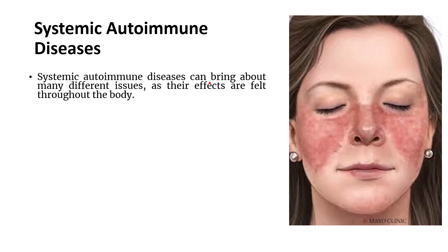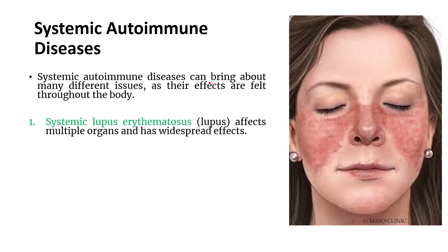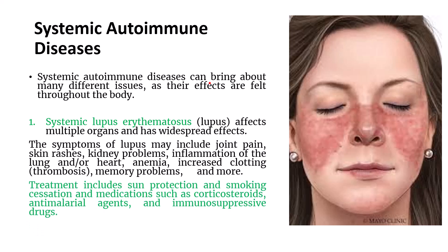Moving to systemic autoimmune diseases, which can be felt throughout the body because they affect multiple organs. First is systemic lupus erythematosus, also called lupus. It affects multiple organs, and symptoms may include joint pain, skin rashes, kidney problems, inflammation of the lungs, heart issues, anemia, increased clotting, and memory problems. Treatment includes sun protection, smoking cessation, medications with steroids like corticosteroids, anti-malarial agents, and immunosuppressive drugs. The characteristic butterfly rash on the face can be seen in lupus erythematosus.